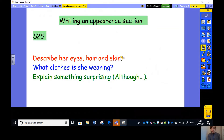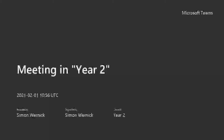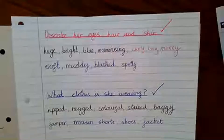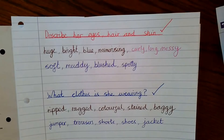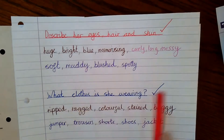Your first step on your piece of paper or in your book will be to write those three steps to success, because then you can tick them off as you go and you know you are following the correct structure for a missing persons poster. Remember, we're writing about this wild child. Let me now share my book and I will model what to do. So here we have our steps to success with some ideas.